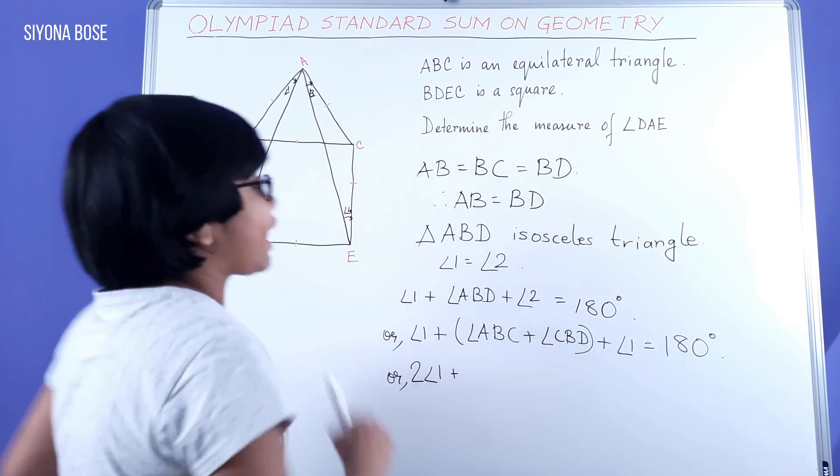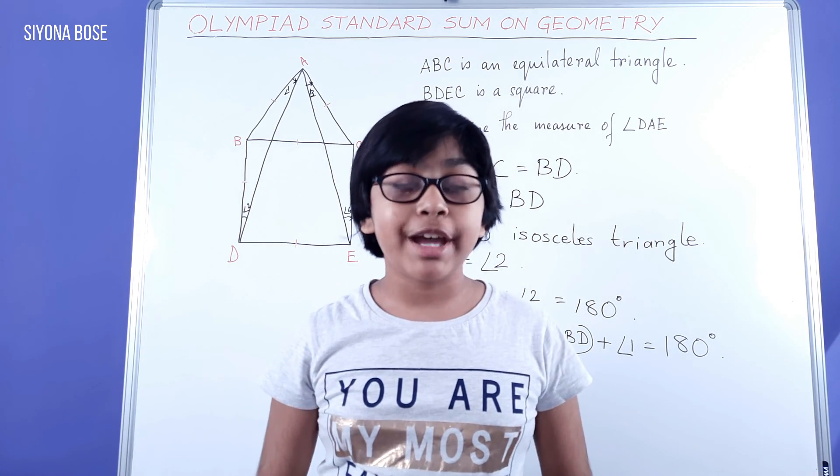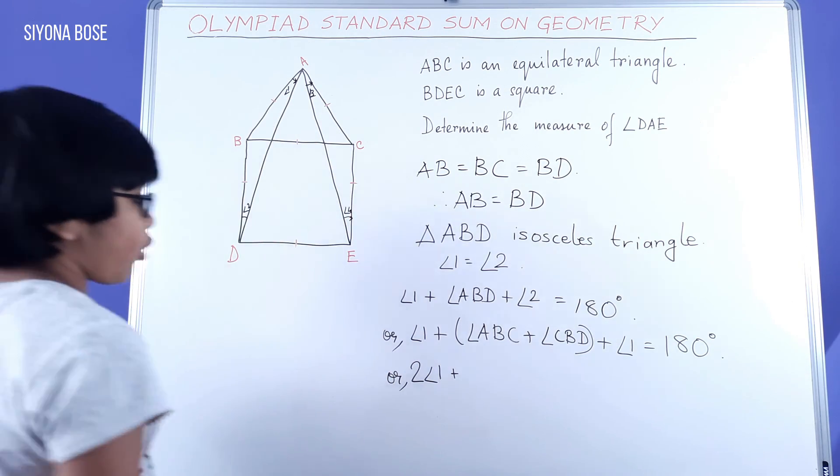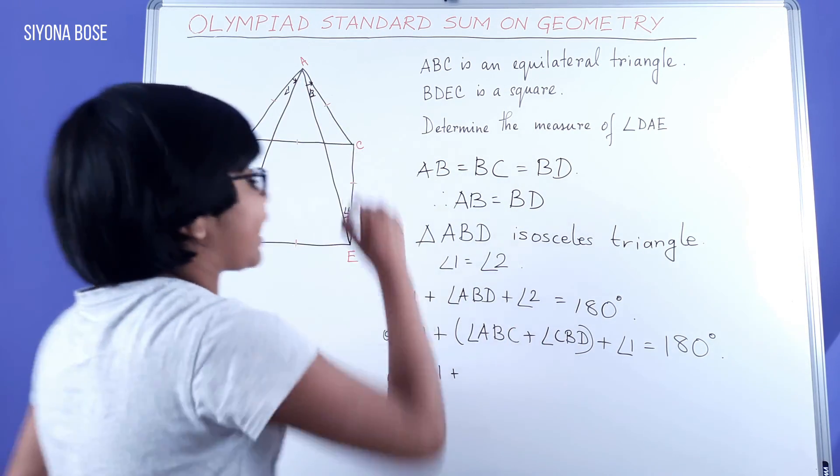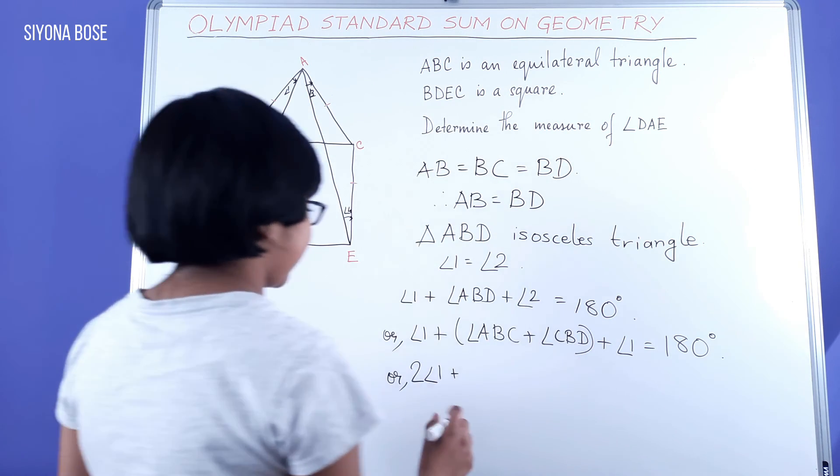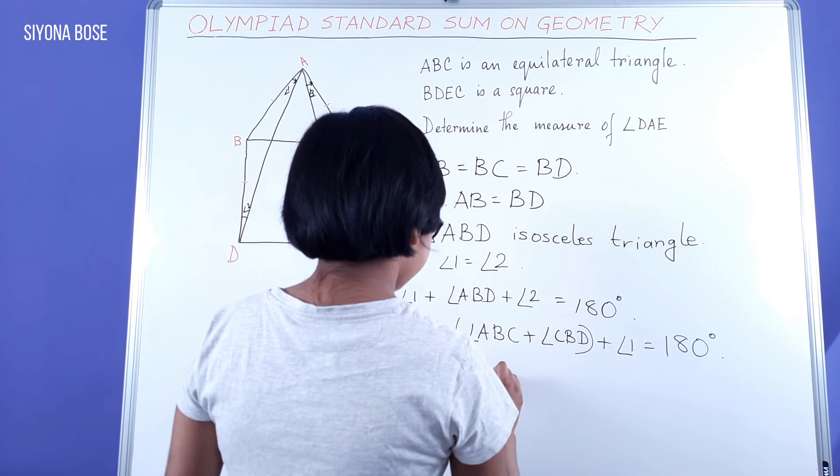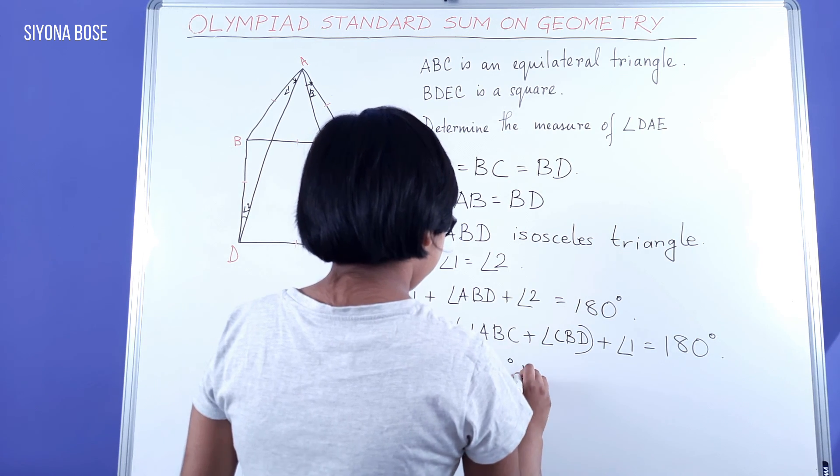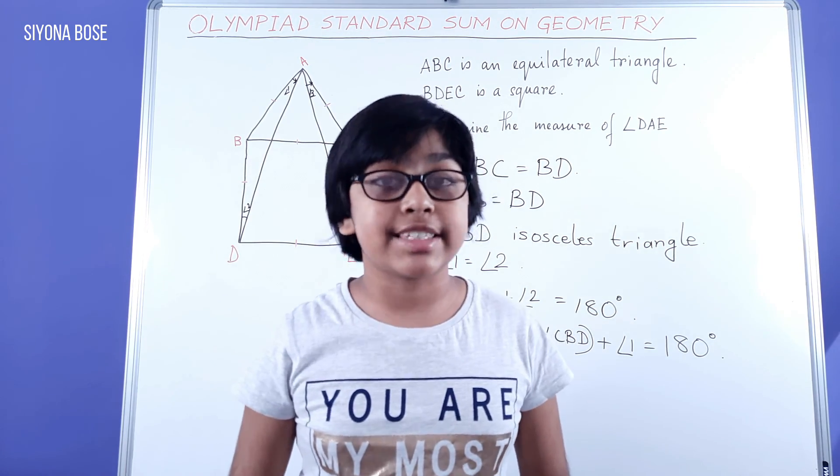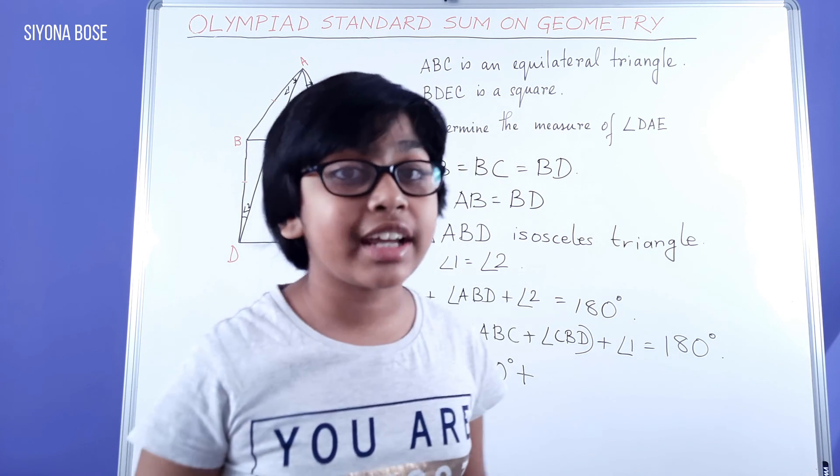This is an equilateral triangle in which the measure of all angles are 60 degrees. So, angle ABC is 60 degrees. Plus, angle CBD, which is an angle of the square, is a right angle. So, it is 90 degrees.